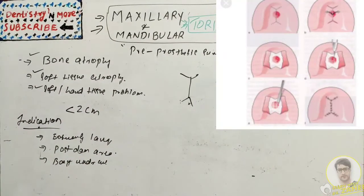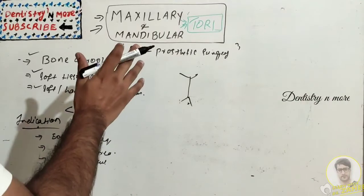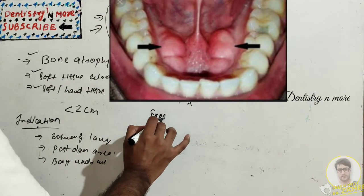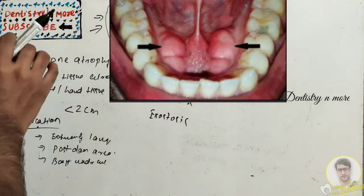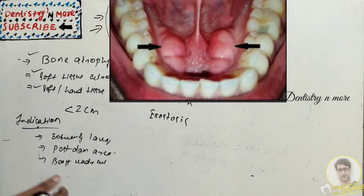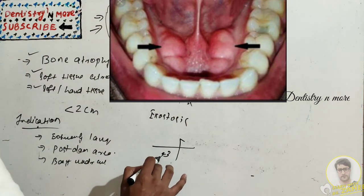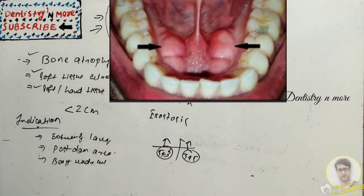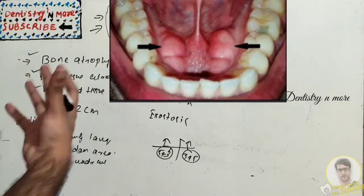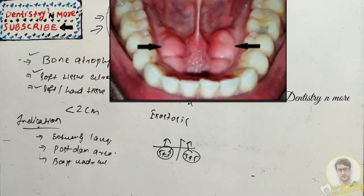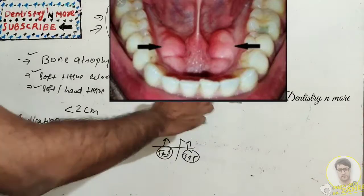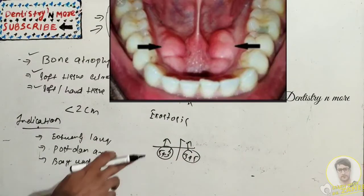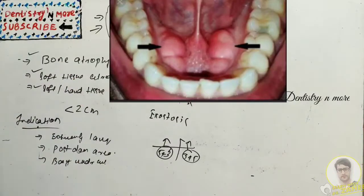Mandibular torus is an exostosis — a bony growth — found on the lingual surface of the mandible, opposite to the canines and premolars. This creates problems with denture retention in the mandible because of the loss of marginal seal in the premolar region, where the actual retention occurs. This exostosis creates a problem with the retention of the mandibular denture.